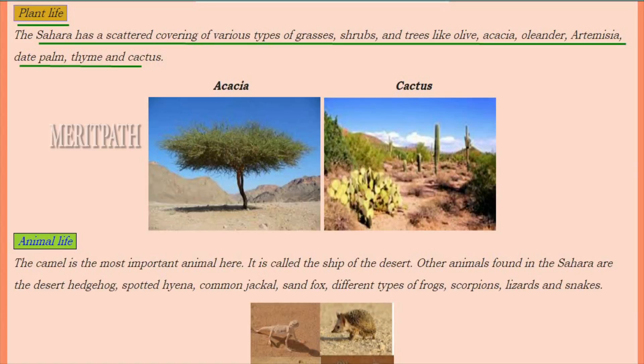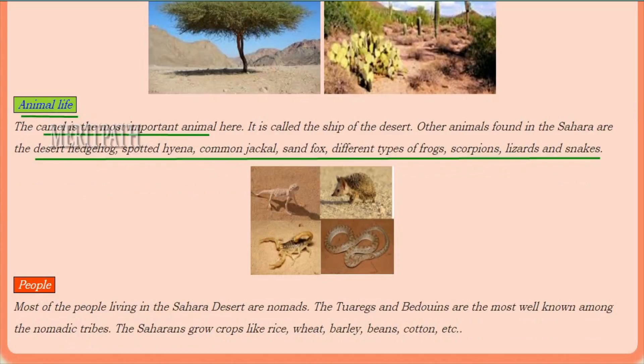Regarding animal life, the camel is the most important animal and is also known as the ship of the desert. Other animals found here include the hedgehog, spotted hyena, common jackal, sand fox, varieties of frogs, scorpions, lizards, and snakes.